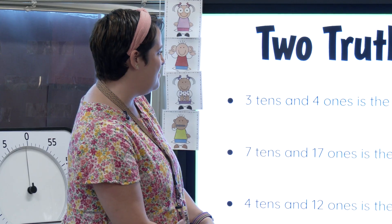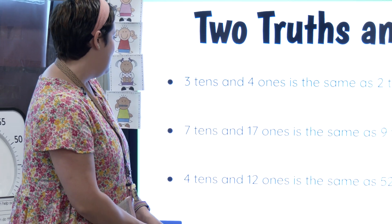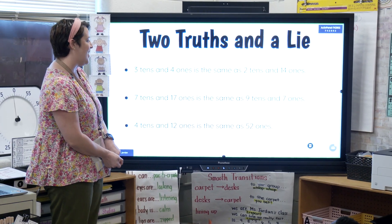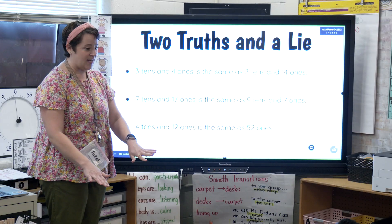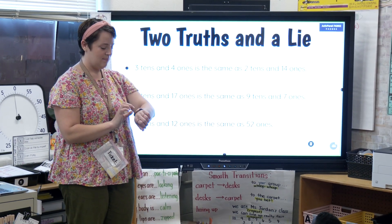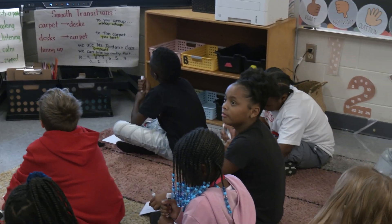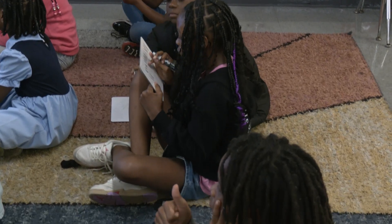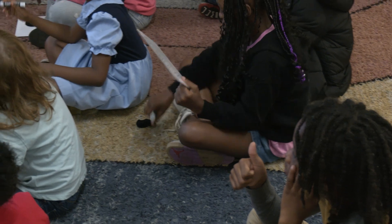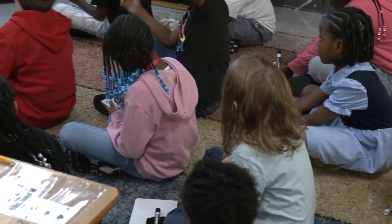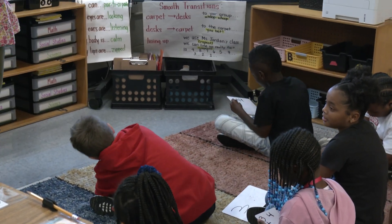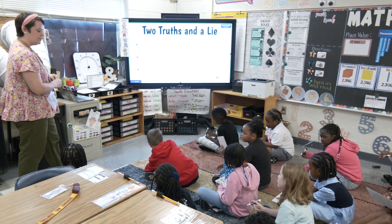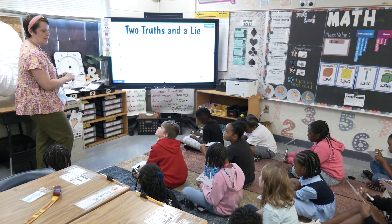The first statement says: three tens and four ones is the same as two tens and fourteen ones. The second: seven tens and seventeen ones is the same as nine tens and seven ones. And the last one: four tens and twelve ones is the same as fifty-two ones. You have your boards if you need them. You have about 30 seconds of private think time. If you think you know which one is the lie, you can write if it's one, two, or three.